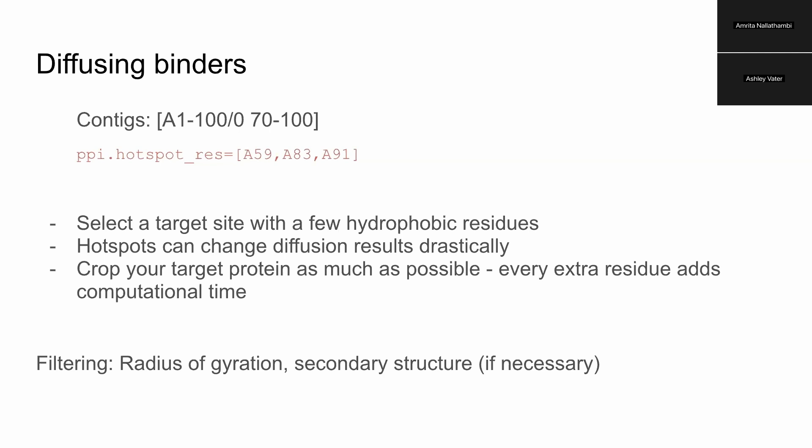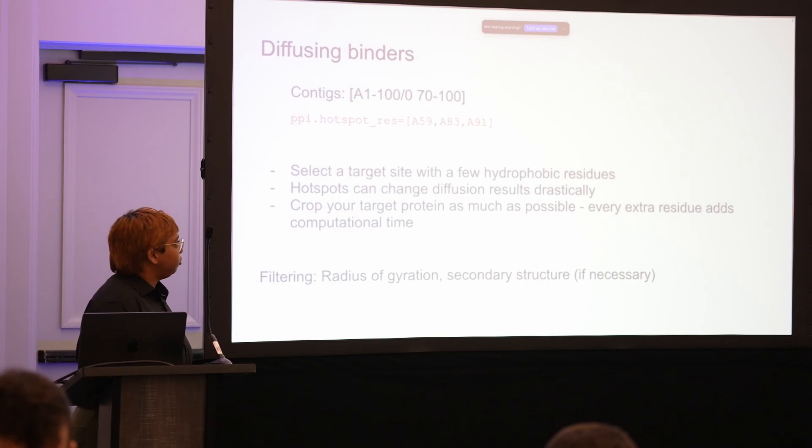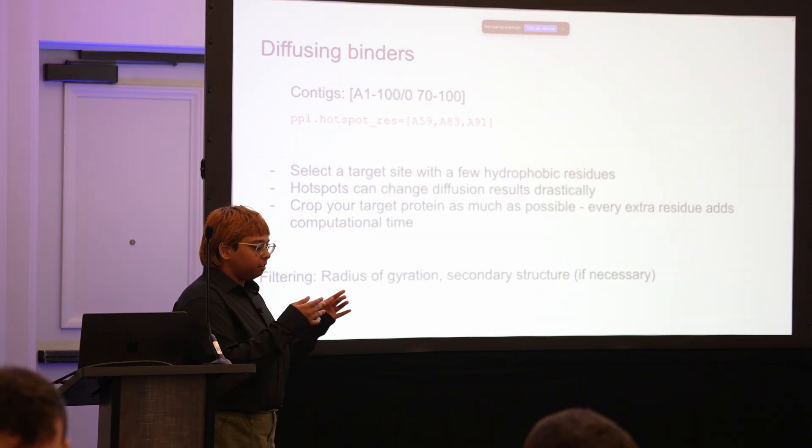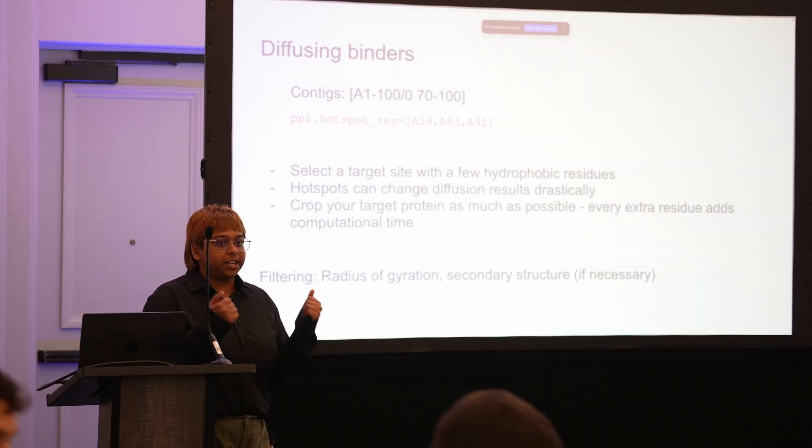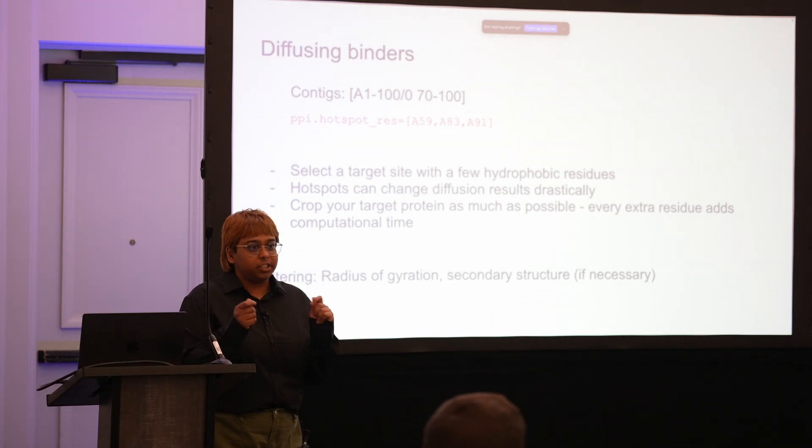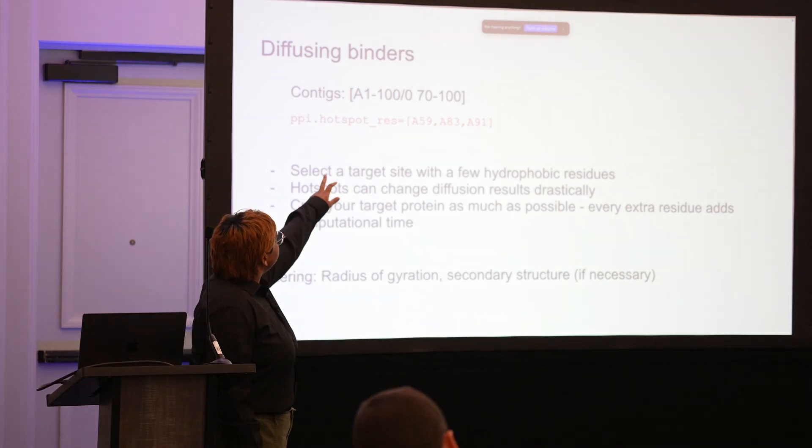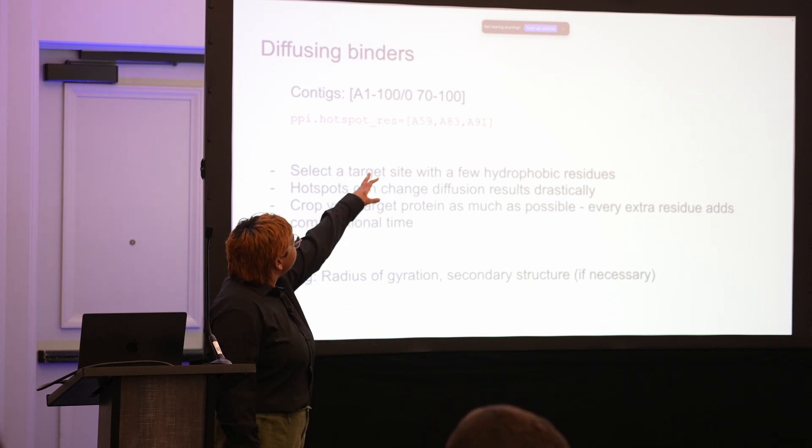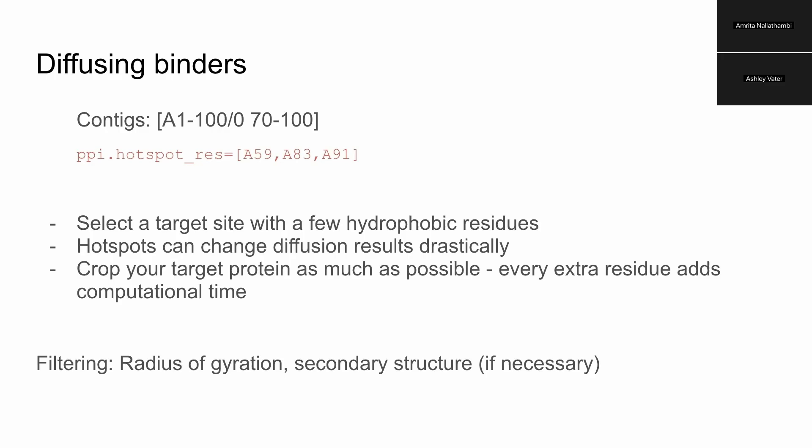The context that we want to use for diffusion essentially tells the program which parts of your input PDB diffusion should take into account and which parts you actually want to diffuse. When you specify a chain with a letter, that means you want that part of the chain to be fixed. When you don't specify a letter, that means diffuse this part, and the slash zero is a chain break. What we're asking it to do here is take residues 1 through 100 of your input target protein and then diffuse another protein.